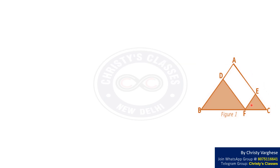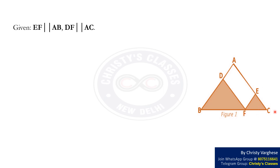It is also given that EF is parallel to AB and DF is parallel to AC. Therefore, angle BDF equals angle BAC which equals 90 degrees, and angle FEC equals angle BAC which equals 90 degrees.